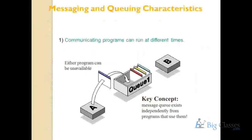Communicating programs can run at different times. Application A is hosted in India, Application B is hosted in New York — these are two distributed systems in two different time zones running at two different times. Application A does not need to wait for B. It can dump business data on Q1, and whenever the remote service comes online, it connects IBM MQ server and can process the data. So IBM MQ supports both synchronous and asynchronous communication.